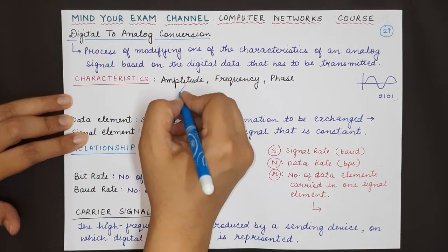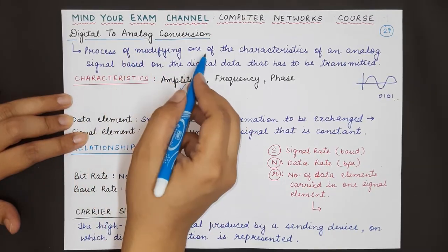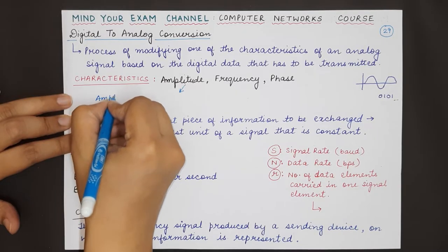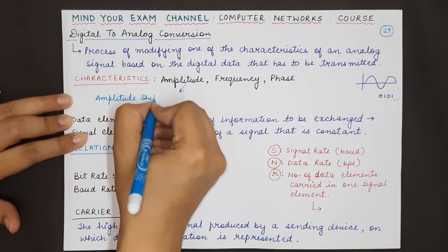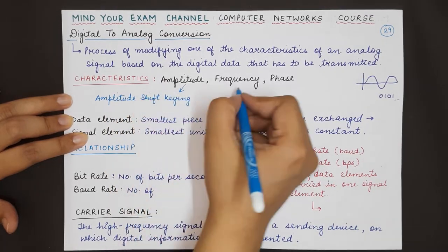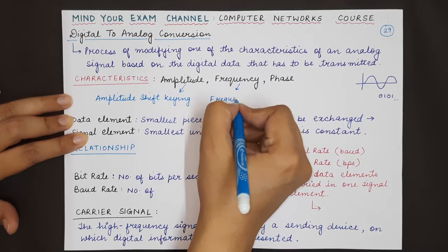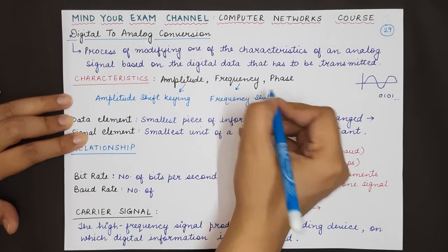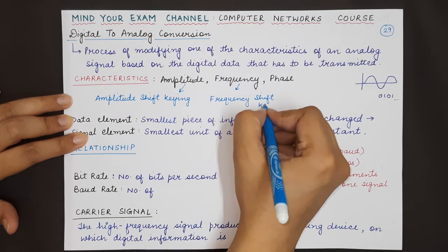If you change the amplitude of the analog signal to encode your digital information, that is known as amplitude shift keying (ASK). If you change the frequency it is known as frequency shift keying (FSK), and if you change the phase it is known as phase shift keying (PSK).